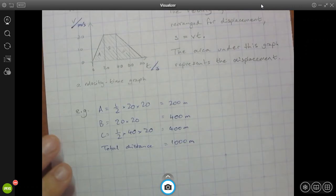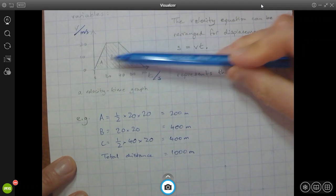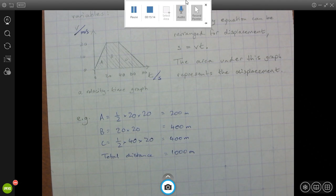So this is how you're going to use the area under the line for velocity time graphs. And it's why it's relevant. I'm going to leave you to finish the rest of the lesson now. Thank you very much.